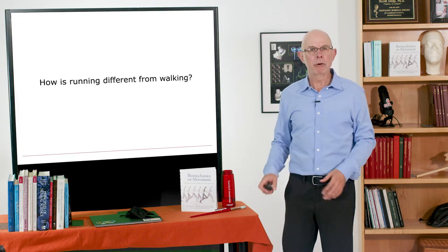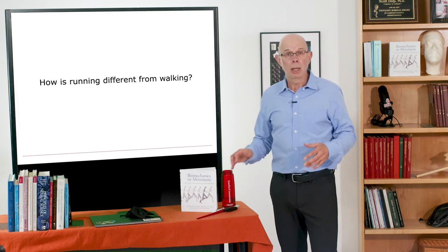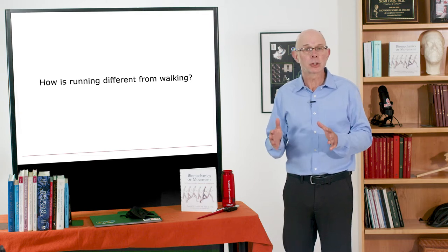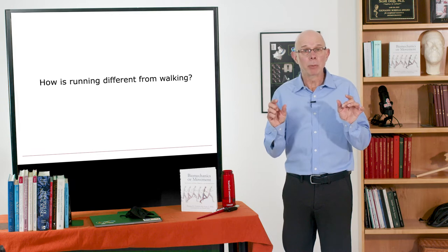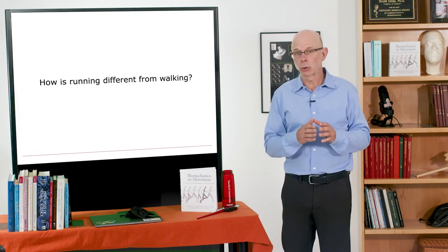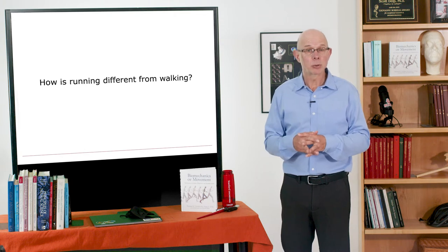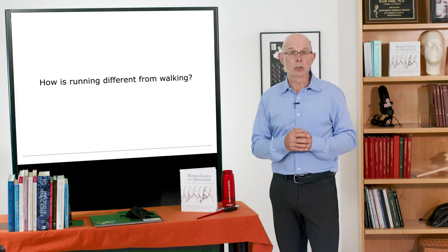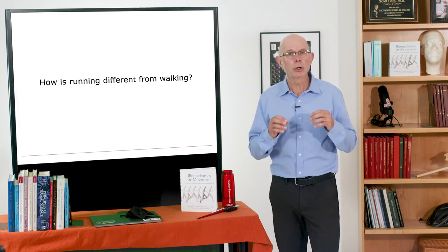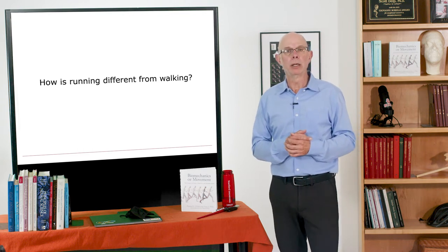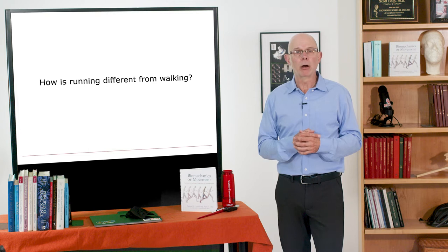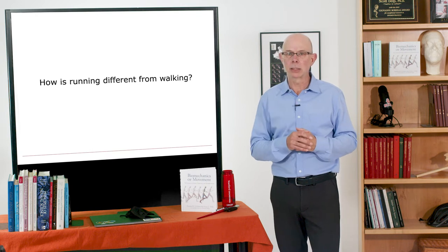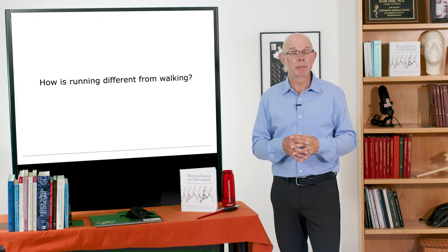So how is walking different from running? Well, we saw in walking there's always at least one foot on the ground. As you walk faster and faster, that period where both feet are on the ground shrinks until you get to a certain speed where you take flight, and that's where running begins. So that's a key difference. Walking, always one foot on the ground. Running, there's a flight phase. But there are other key differences between walking and running. We saw that there's this beautiful trade-off between gravitational potential energy and forward speed in walking, and that doesn't exist in running.